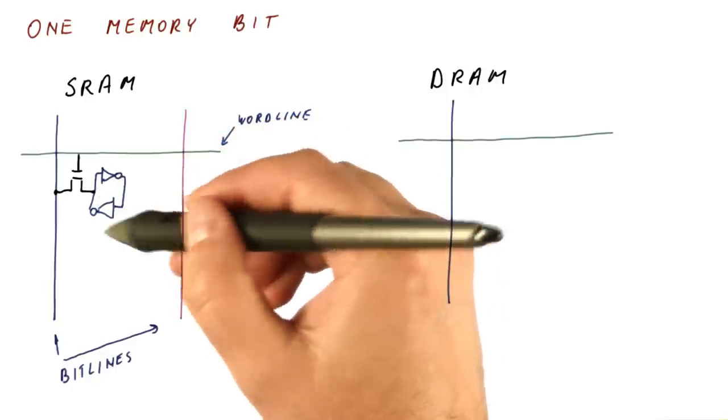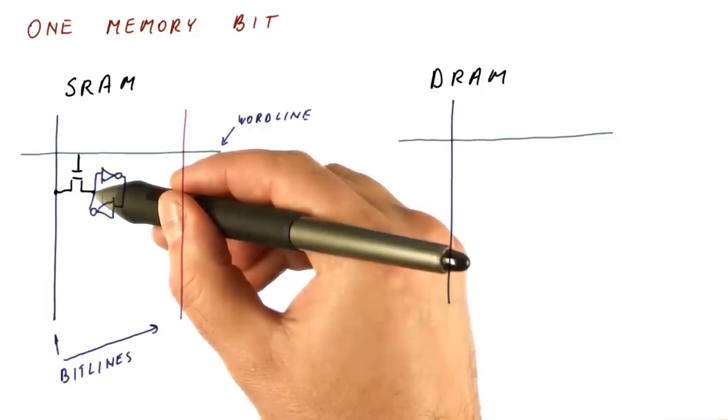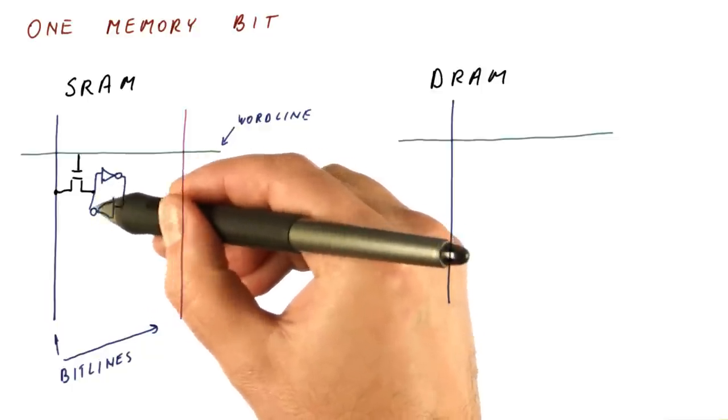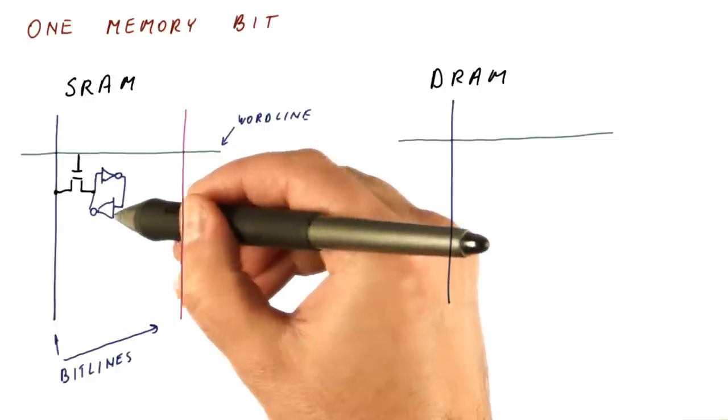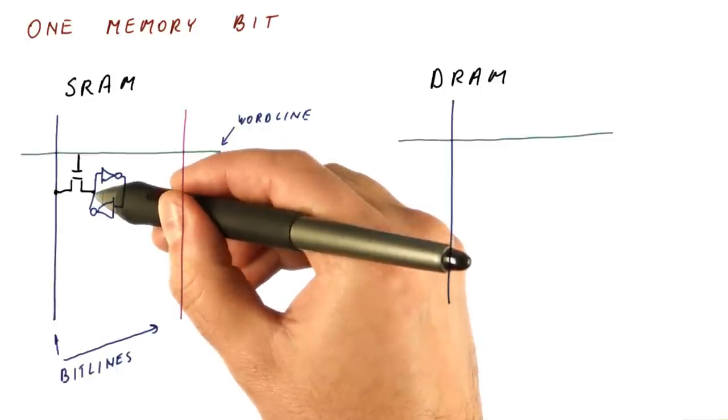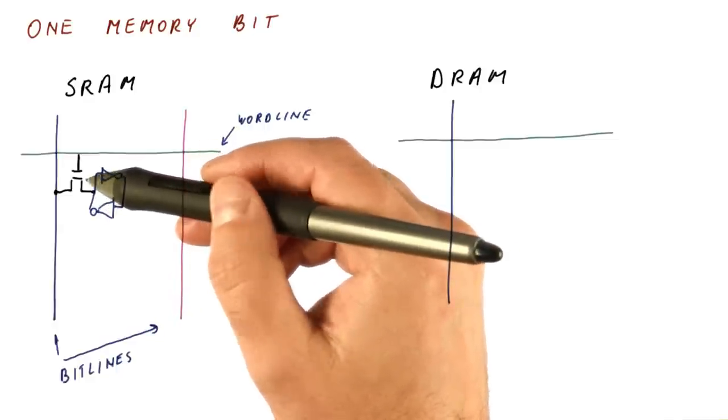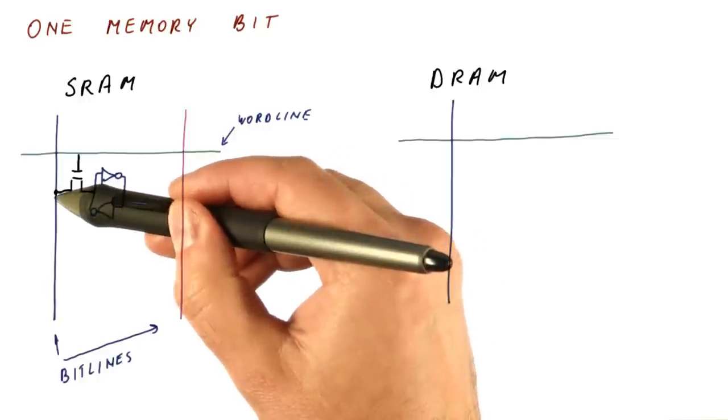So how do we write to this cell? If we try to put a one here, this inverter here is working against us. Because it sees a one, it wants to output a zero. And the answer to that is that this transistor here connects this cell to the bit line.